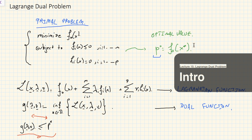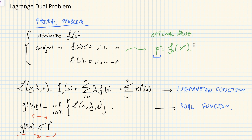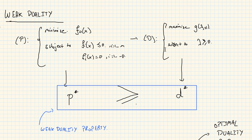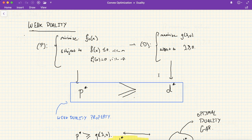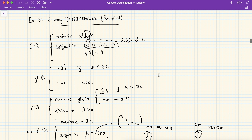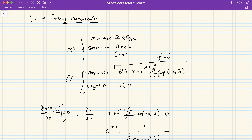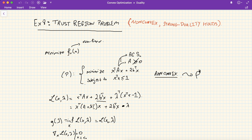Hello and welcome to lecture 15 of this course on convex optimization, entitled Lagrange Dual Problem. We're going to go deeper into what duality means, and in particular the relation between the primal problem and the dual problem. We'll see when the duality gap is zero, and cover examples including the two-way partitioning problem, linear programs, QCQPs, entropy maximization, and the trust region problem.